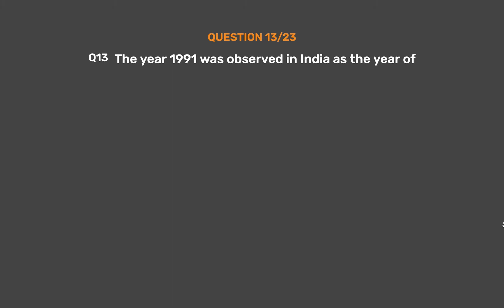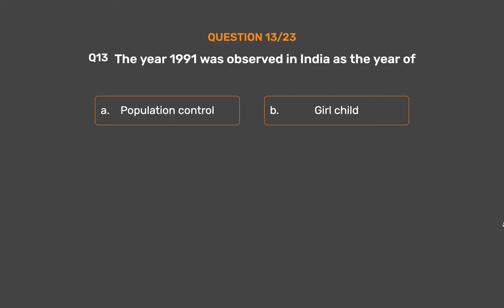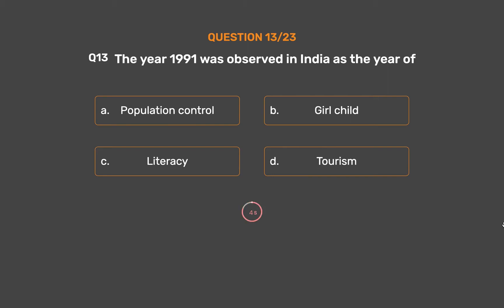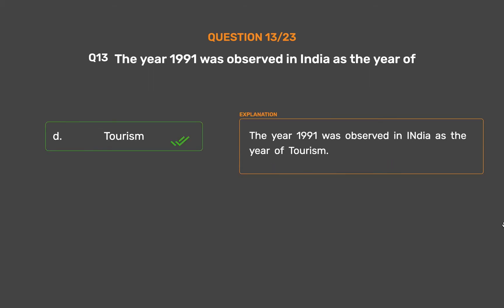Question No. 13. The year 1991 was observed in India as the year of: Option A, Population Control; Option B, Girl Child; Option C, Literacy; Option D, Tourism. The correct answer is Option D, Tourism. The year 1991 was observed in India as the year of tourism.